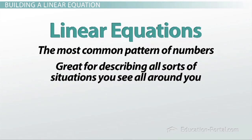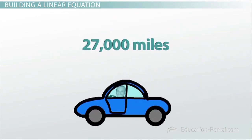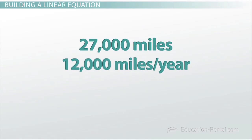One example has to do with the car that I bought. As soon as I turned 16, my parents helped me buy a used car. When I bought my car, it had 27,000 miles on it. I've owned it for a while now, and every year I drive it about 12,000 more miles.